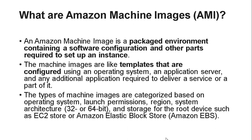The types of machine images are categorized based on operating system, launch permissions, region, system architecture, and storage for the root device such as EC2 store or Amazon Elastic Block Store.